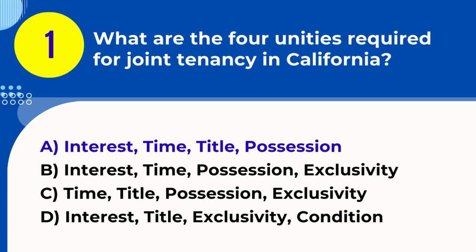Explanation. For joint tenancy in California, the four unities required are unity of interest, unity of time, unity of title, and unity of possession. This means all joint tenants must have an equal share, acquire the interests at the same time, through the same document, and have equal rights to the whole property.